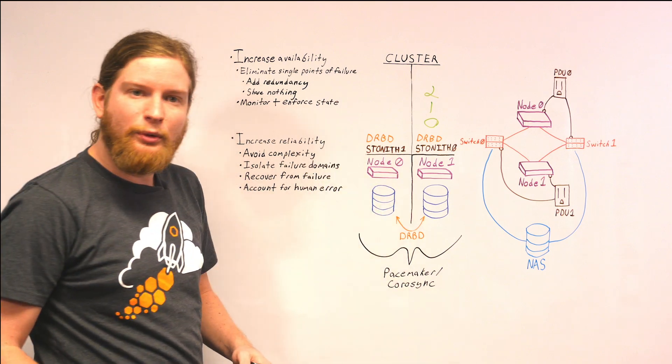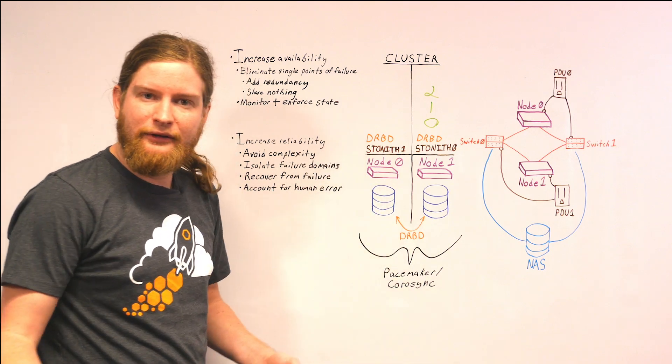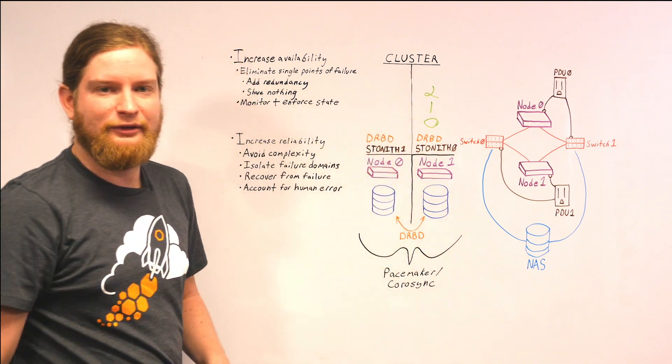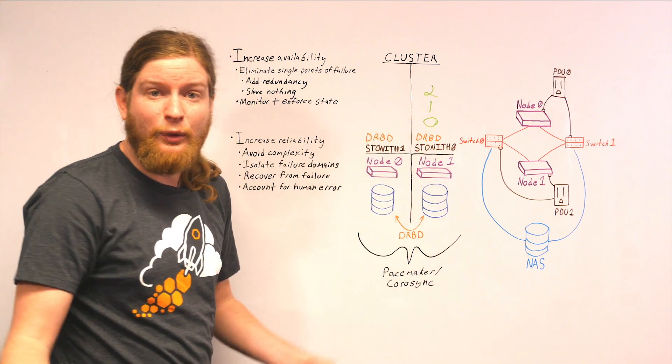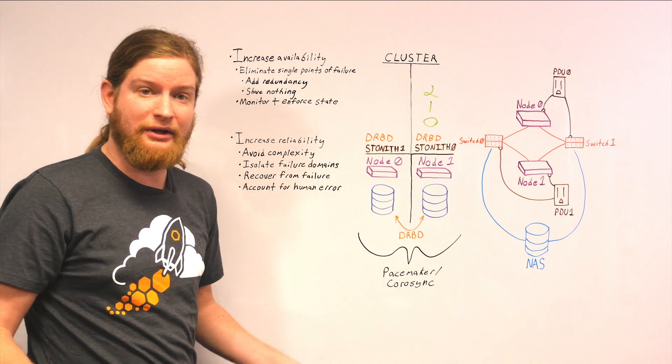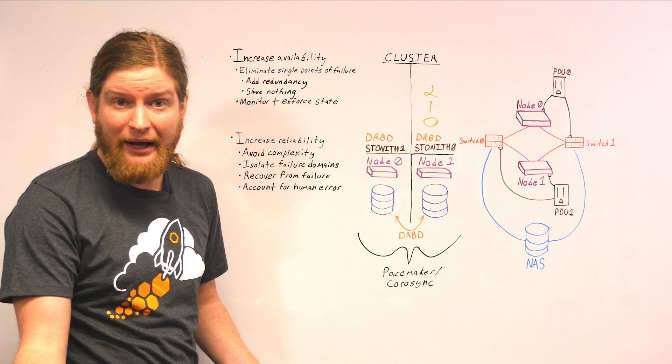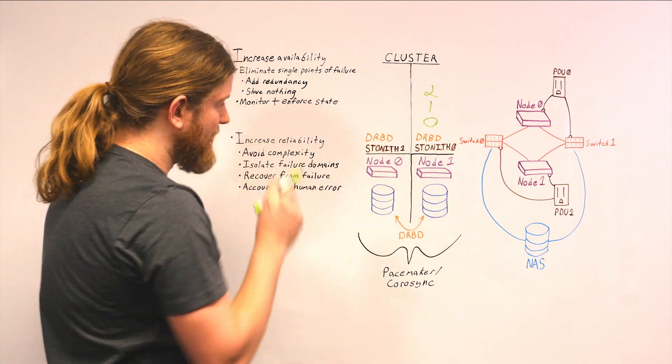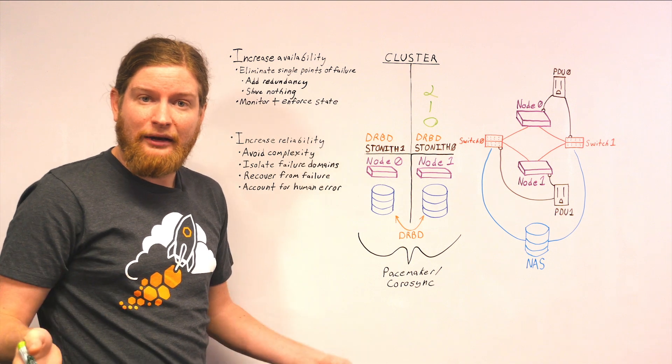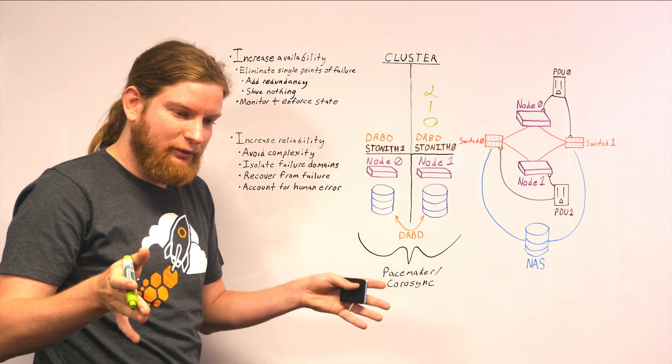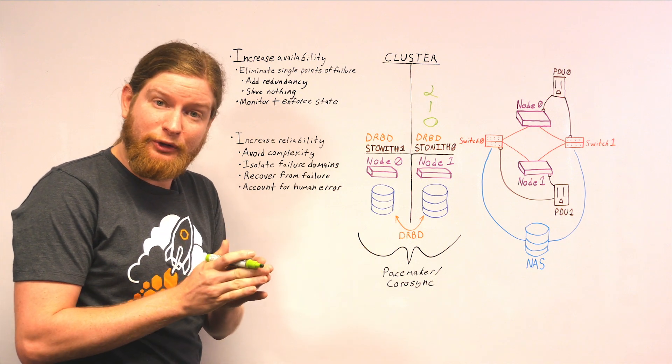Not only to account for failure, but what if you want to work on node zero? What if it needs to be rebooted? Then you can quickly move your applications over to node one and do whatever you want to node zero. Do your reboots, do your updates, replace the RAM. A cluster allows you to not only avoid unscheduled unexpected downtime, but also reduce the amount of scheduled downtime to a really small degree.